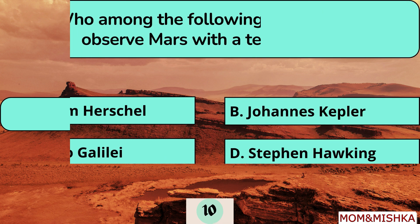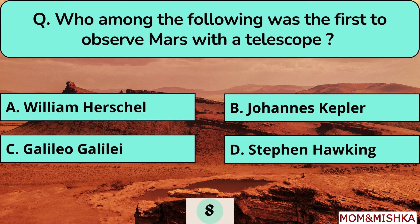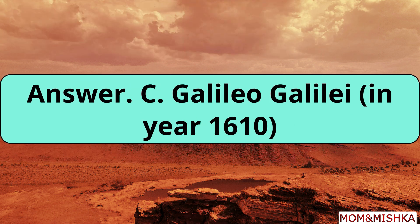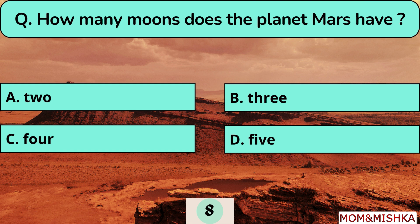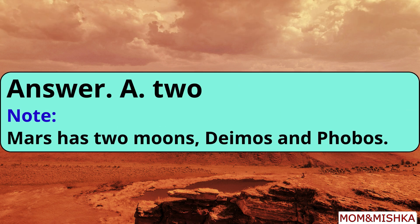Galileo Galilei was the first to observe Mars with a telescope. He observed Mars in the year 1610. Mars has two moons.